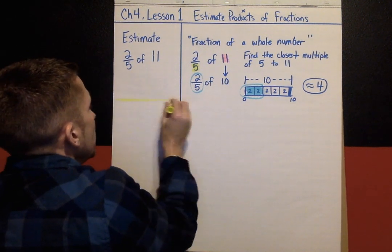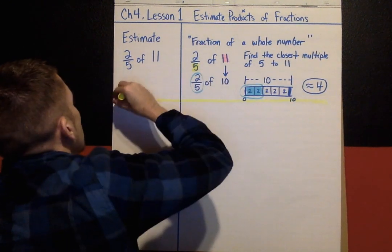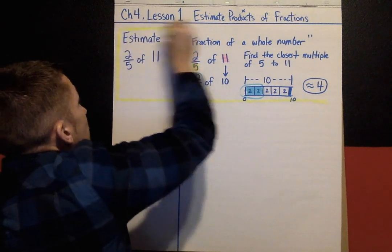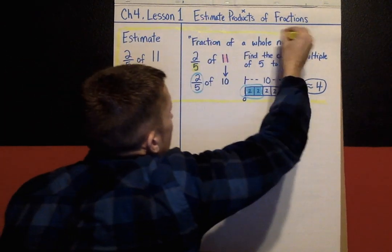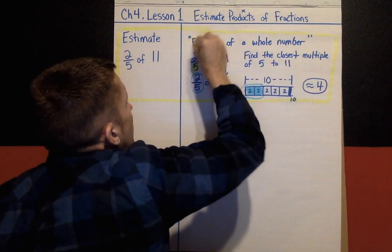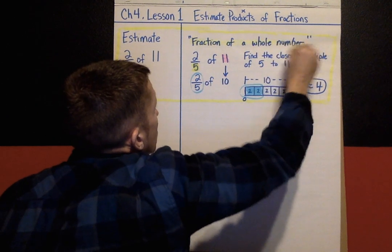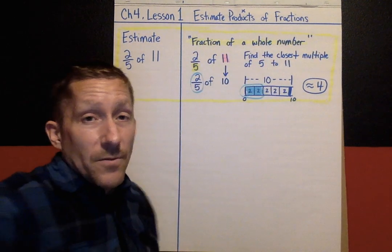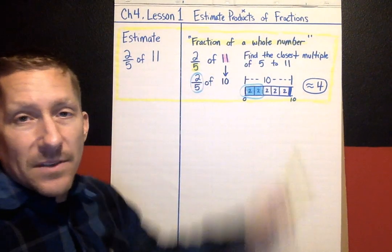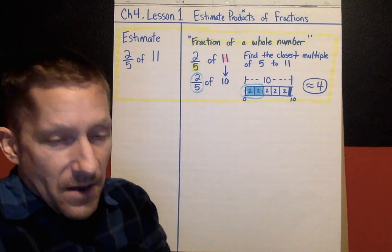I'm going to put a big yellow highlighted box around this example. For today, when you see a fraction of a whole number problem, this yellow strategy is what you're going to use.